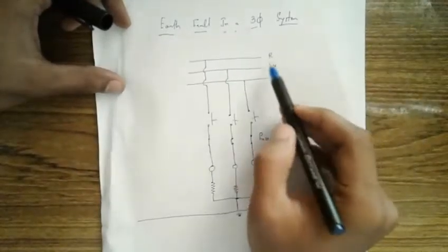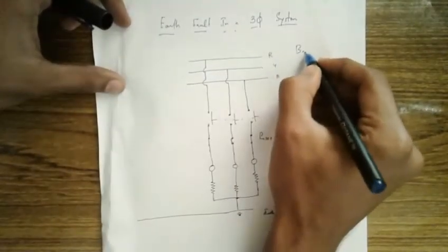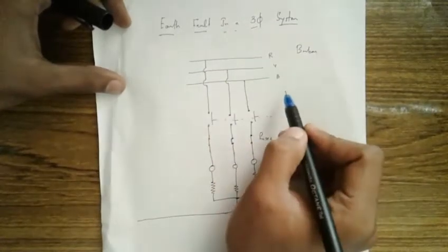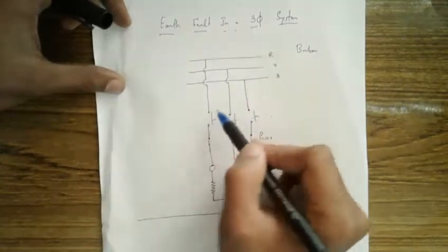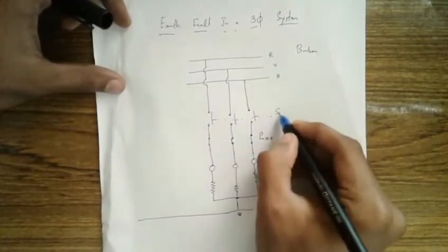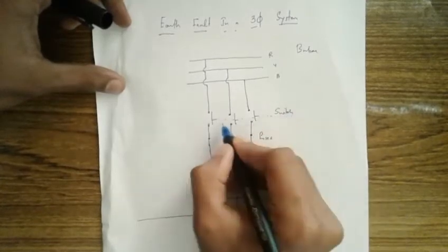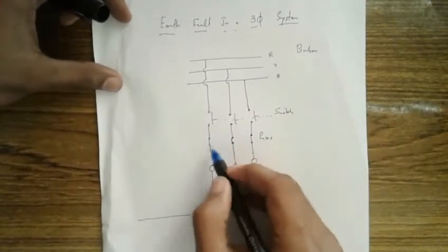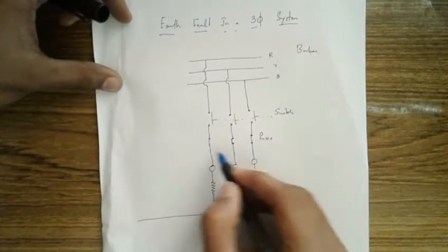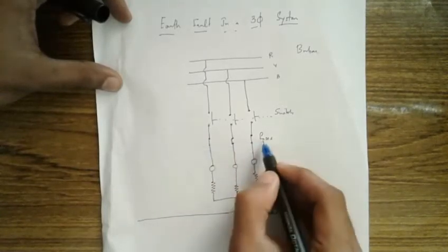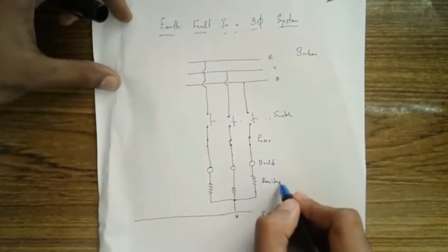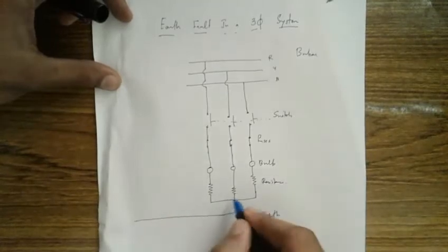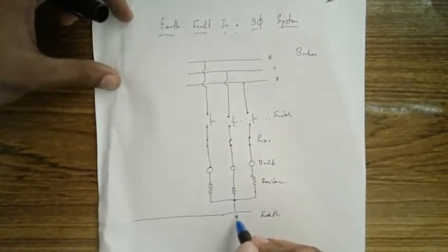This is the bus bar - the bus bar connection is represented as R, Y, B. From each of R, Y, and B I have taken one connection and connected to a switch, which is right now in open condition. Then we have fuses for each of R, Y, and B, and this is the bulb. Here we have a resistance which is connected to a neutral point, and that neutral point is connected to earth.